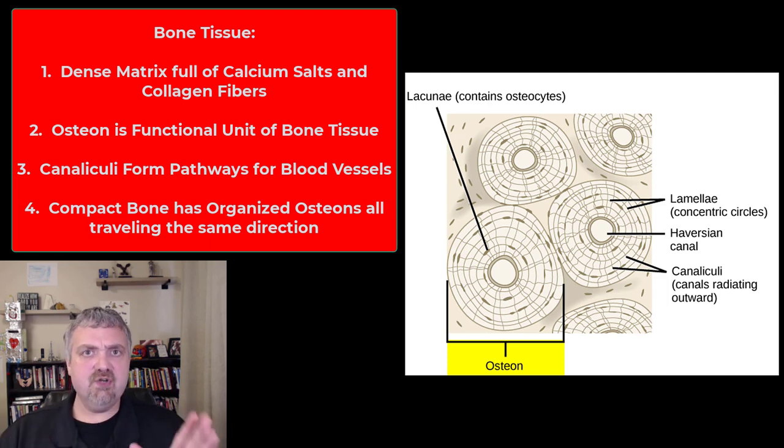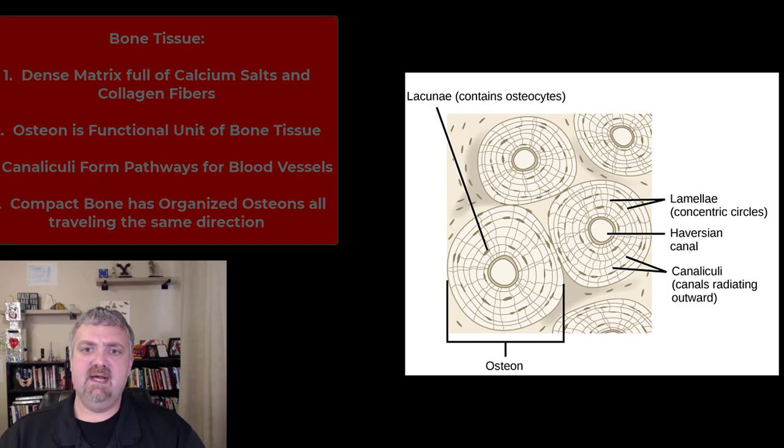The functional unit of bone tissue is an osteon. I already talked about the osteocytes, the mature bone cell. The canaliculi are how blood vessels get in and out so they can trade nutrients and waste products. In compact bone, you have very organized concentric layers of bone cells with mineral tissue. You don't see that in spongy bone. That's the key to look at here as far as an individual osteon.